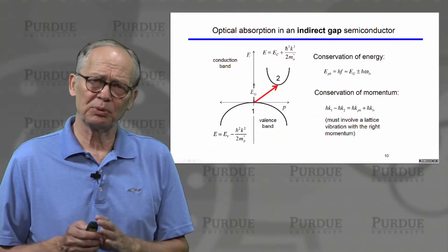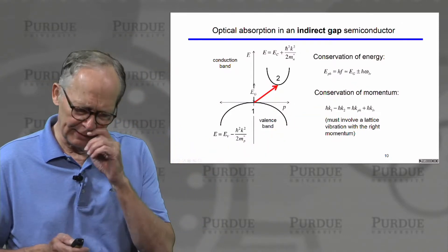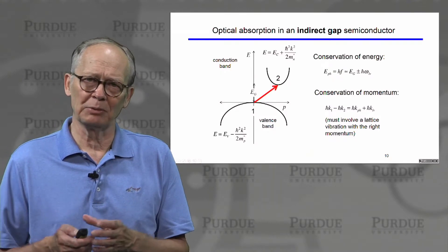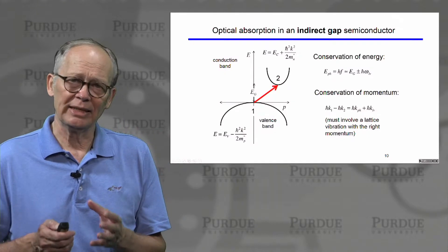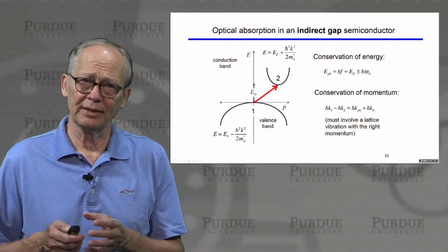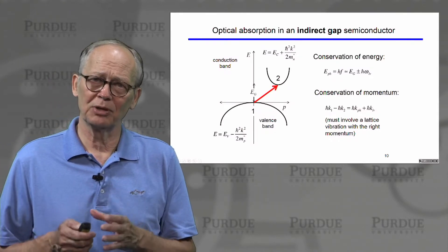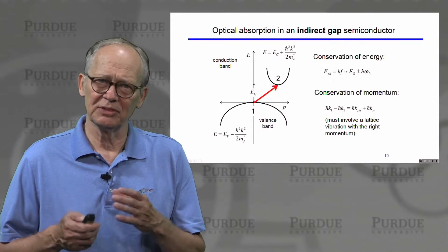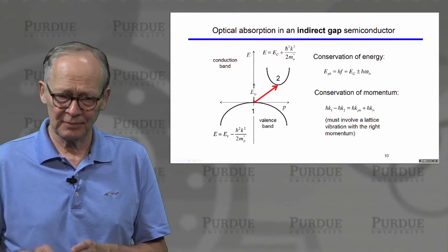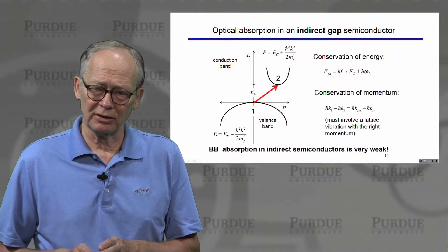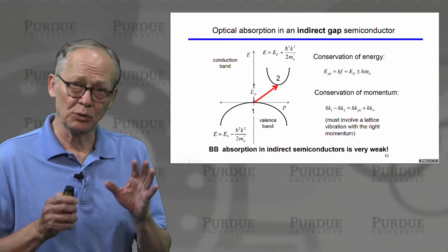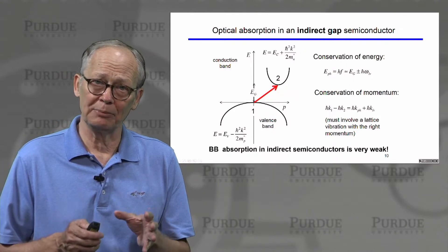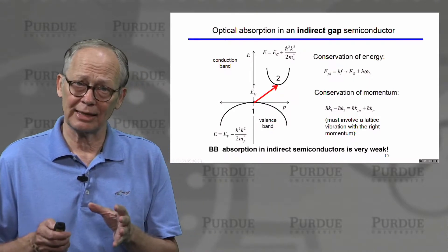So this is the process in an indirect gap semiconductor. You can see that this process is less probable because we need to find a phonon — a lattice vibration with the proper momentum — to facilitate the transition. That's a less probable event, and you can see it very clearly by looking at typical results for direct gap and indirect gap absorption.